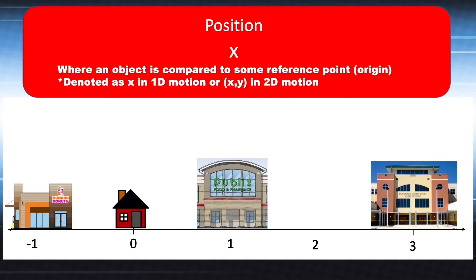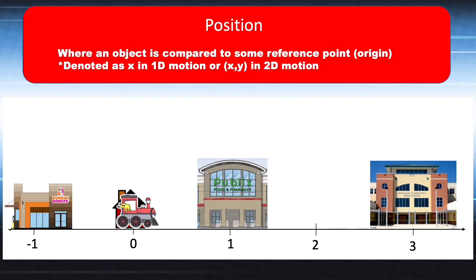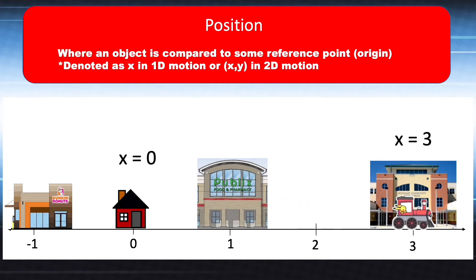Displacement is change in position, denoted as x for position along the x-axis. Here's an example with four locations: coffee shop at x equals negative 1, then x equals 0, x equals 1, and x equals 3 (Suncoast High School). Pikachu starts at x equals 0 — that's his initial position — and travels to x equals 3. His change in position, delta x, is 3, and that's called displacement. So displacement equals 3.